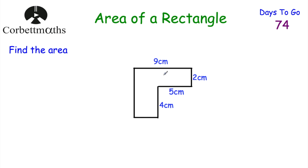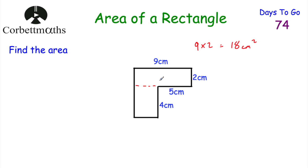Our last question is a compound shape — an L-shape. We've been asked to find its area. I'm going to chop it into two rectangles. I'll split it horizontally: a rectangle at the top and a rectangle at the bottom. The top rectangle is 9 multiplied by 2, which equals 18 centimetres squared.